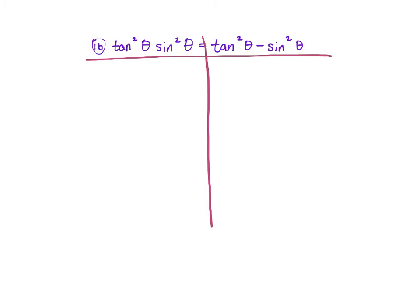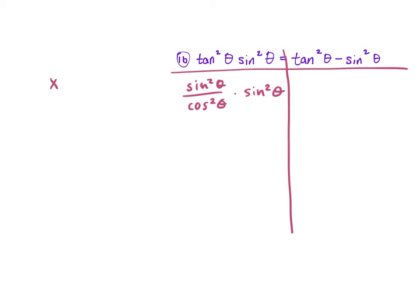Change tangent to sine over cosine. Since it's tan², it's sine² over cosine², times sine² θ. Combining: think of it as x² times x² over y². x² times x² is x⁴, so this gives us sine⁴ θ over cosine² θ.